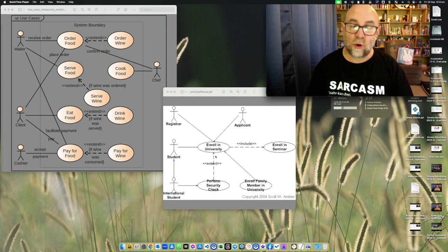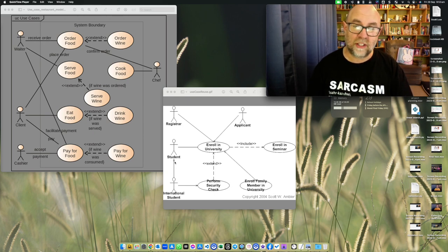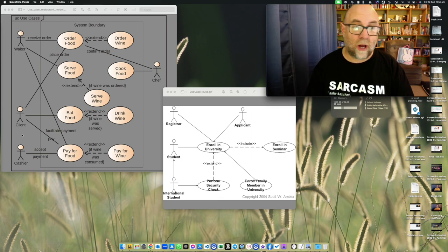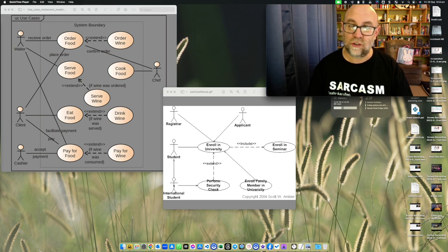The other thing that I want to point out here is that the international student having an arrow up to the student means that that's a generalization. So they might be, for instance over here, we might have a new client or we might have a returning client, but a returning client would be a subset of the clients just as an international student would be a subset of the students.